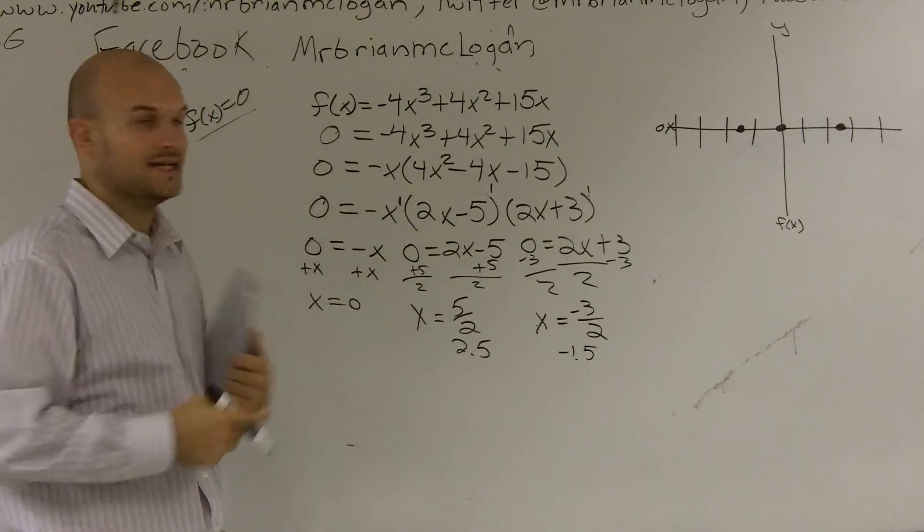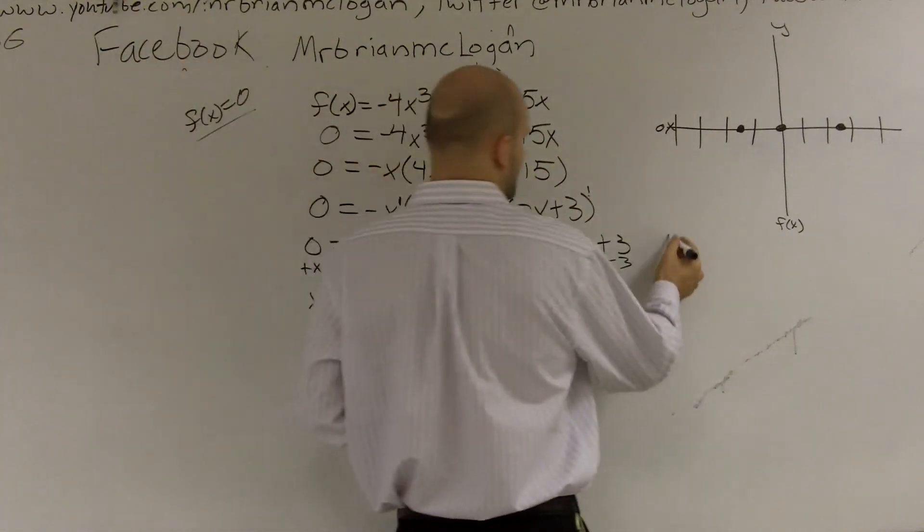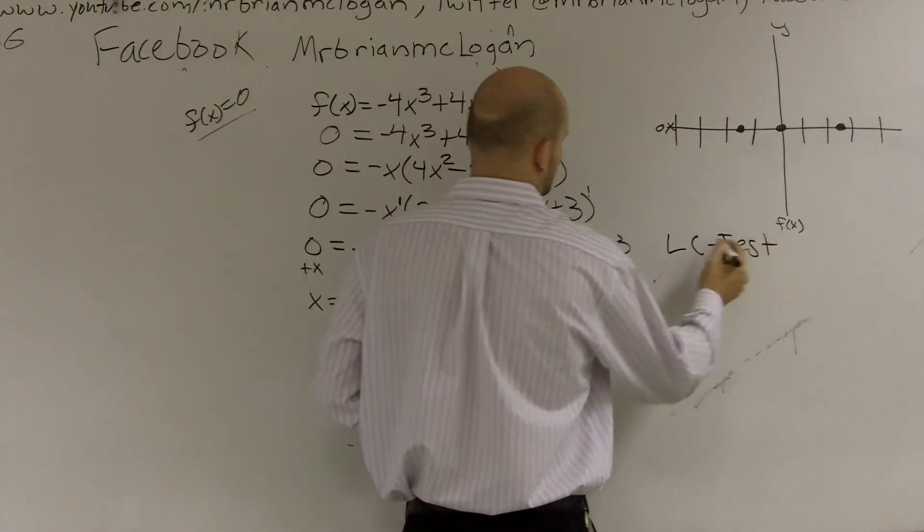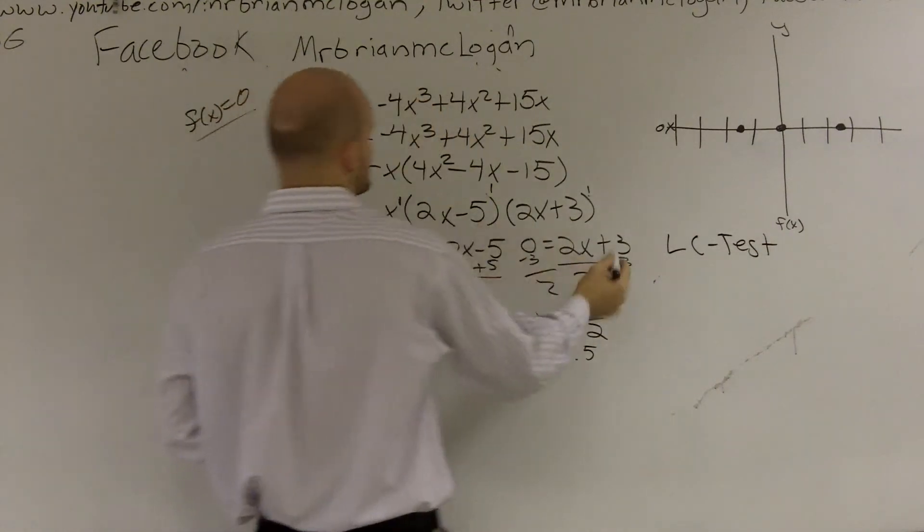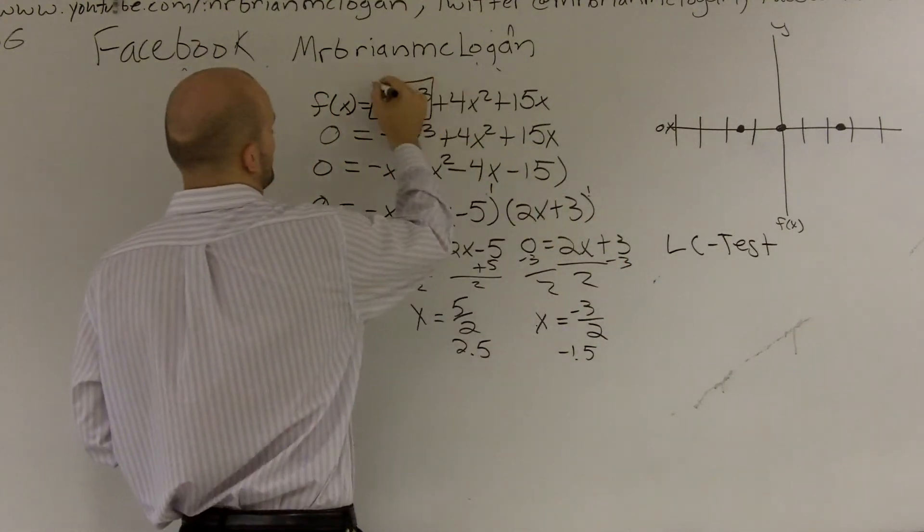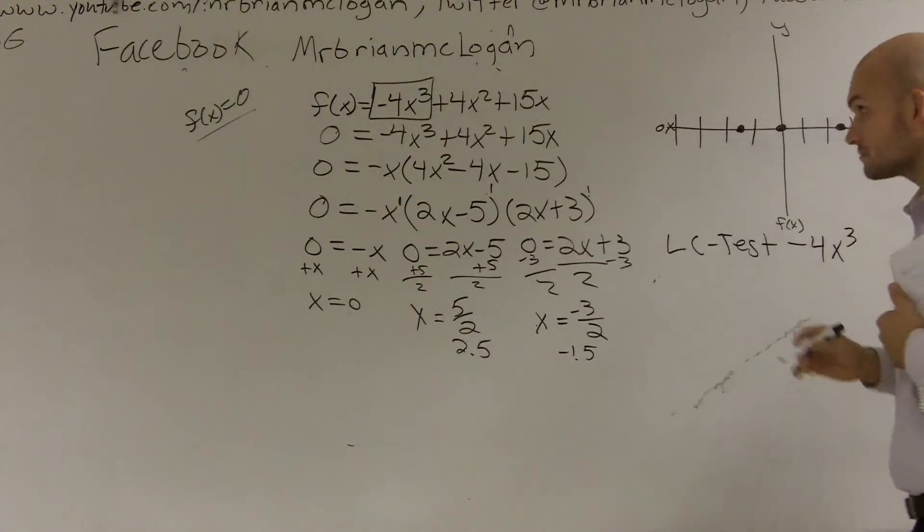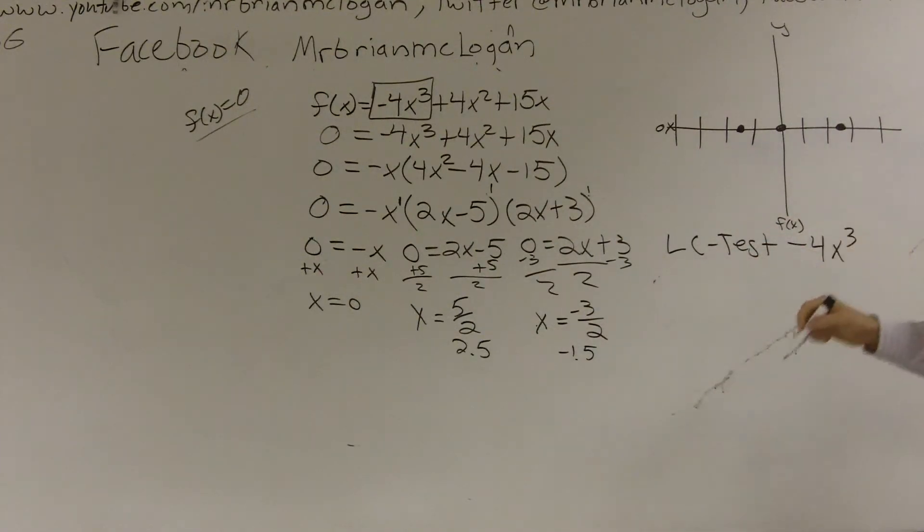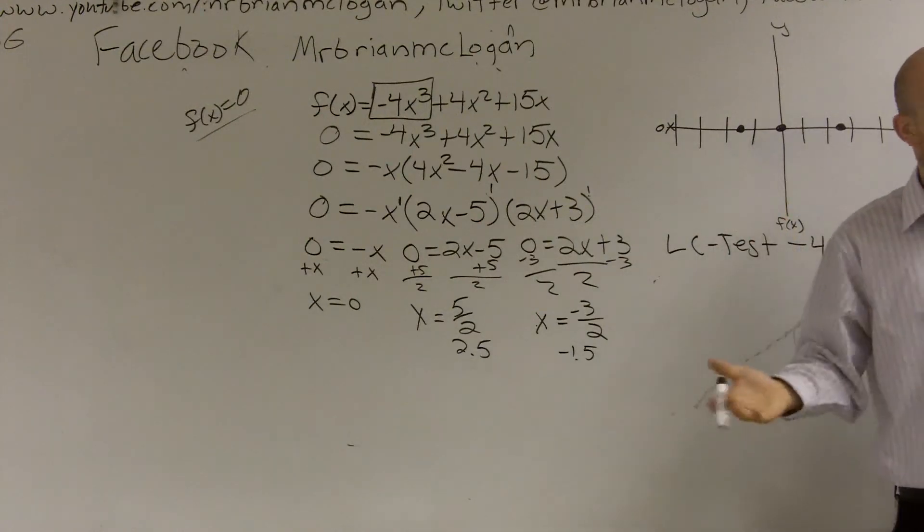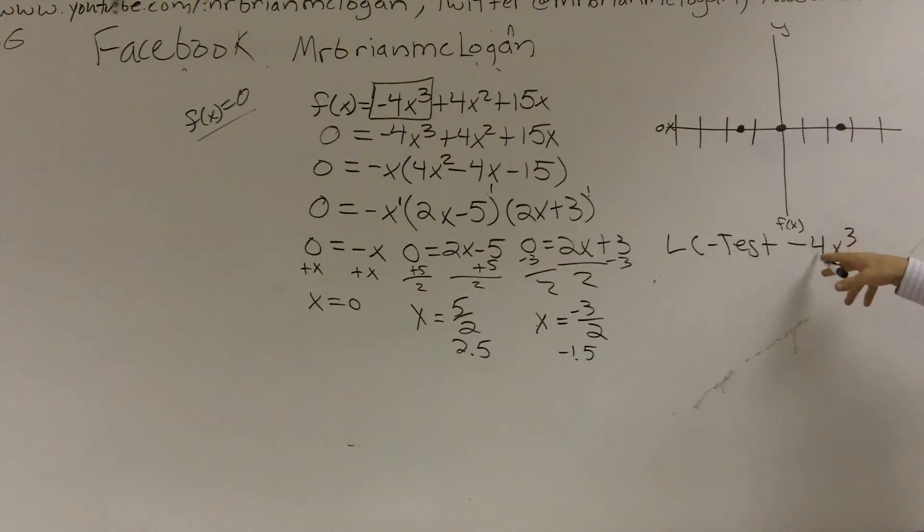The next thing I need to look at is I need to look at our leading coefficient, or the leading coefficient test. And what you guys see is that is negative 4x cubed. And when you're looking at negative 4x cubed, the first thing we do is we look at if it's odd or even. Since it's odd, we know it's either going to fall and it's going to rise. Because even functions both fall or both rise. Odd functions rise and fall. And then the next thing I need to determine is if it's going to be if my a, the number in front of my term, is positive or negative.